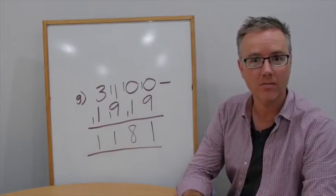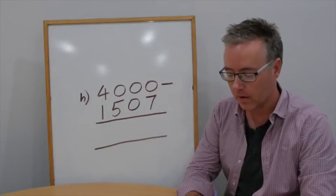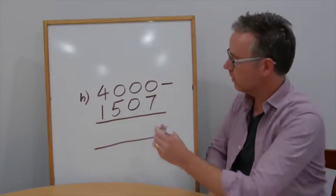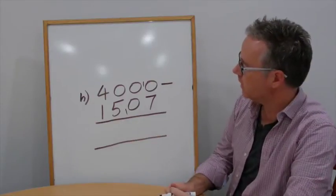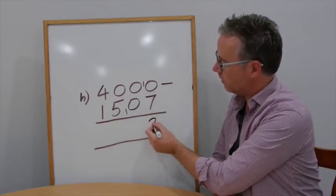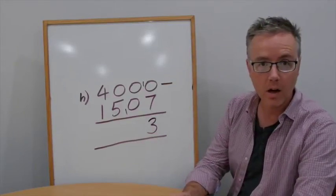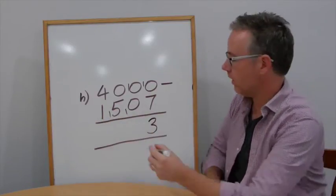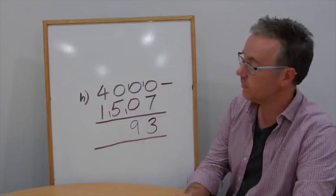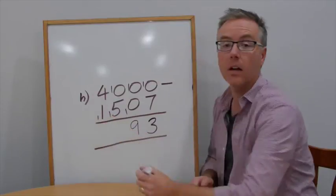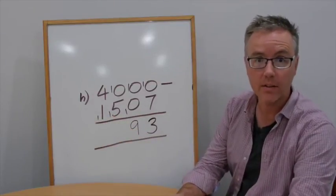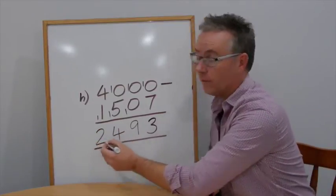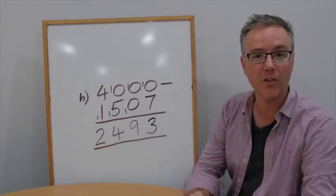Question H: 4,000 take away 1,507. 0 take away 7, can't do. Add 10, add 10. 10 take away 7 is 3. 0 take away 1, can't do. Add 10, add 10. 10 take away 1 is 9. 0 take away 6, we can't do. Add 10, add 10. 10 take away 6 is 4. And 4 take away 2 is 2. So the final answer for today is 2,493.